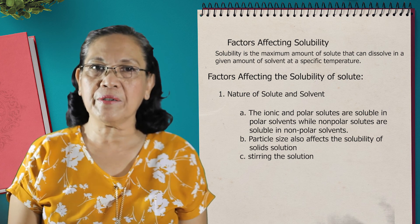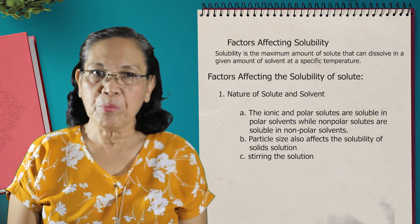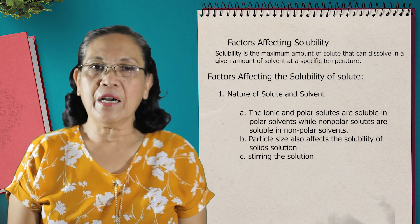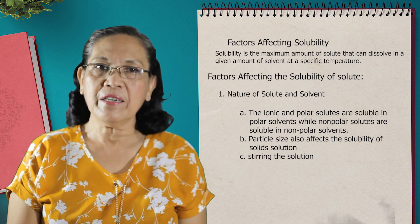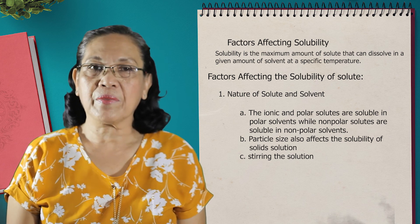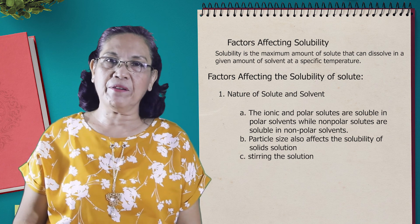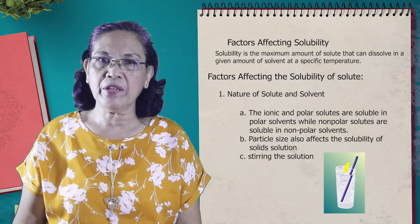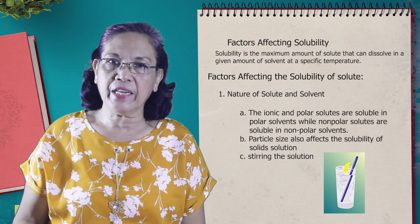Another factor to consider under the nature of solute and solvent is particle size. When the solute is smaller or finer in size, these finer particles are more soluble in the solvent. That is because the finer the particles, the greater the surface area exposed to the solvent, so the solvent can readily dissolve the solute. Another sub-factor is stirring of the solution. As you stir the solution, you allow the solvent to move around the solute, allowing fresh solvent to come in contact with the solute, so the solute can easily be dissolved.